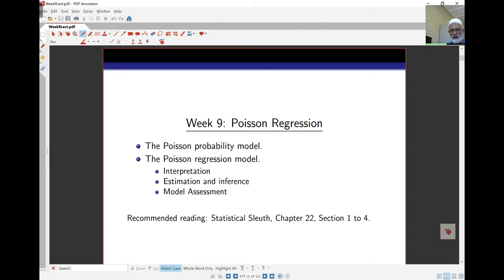So we shall look at the Poisson probability model. Some of this is a revision. We've seen the Poisson distribution before earlier and then we'll take a look at the Poisson regression model. Some ideas here will be similar to what we saw with binomial but some will be different and this comes from chapter 22 of our textbook.